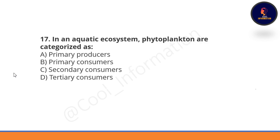In an aquatic ecosystem, phytoplanktons are characterized as primary producers, primary consumers, secondary consumers, or tertiary consumers. Option A will be correct — in an aquatic ecosystem, phytoplanktons are characterized as primary producers.